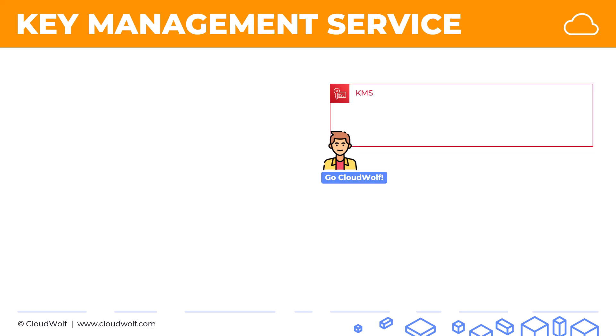What they're going to use is KMS, which is a public regional service that manages cryptographic keys for applications and services to secure data. Basically, it's a facility that AWS provides for you to create cryptographic keys, store them, and encrypt certain pieces of data.